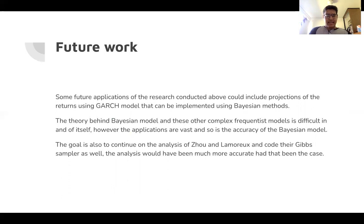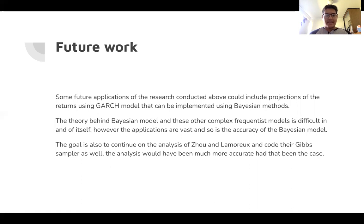Some future work I would like to undertake is applying GARCH models using Bayesian methods, which is a direct continuation of what we did here. The theory behind the Bayesian model and other complex frequentist models is difficult in and of itself; however, the applications are vast and so is the accuracy of the Bayesian model. As we can see, we got a similar result to the frequentist approach. The goal now is to continue working on Lamoura and Jouk's analysis and code their Gibbs sampler as well — it can be done by spending more time on the paper and using data with those correlation matrices, which would give analysis more accurate to the paper.